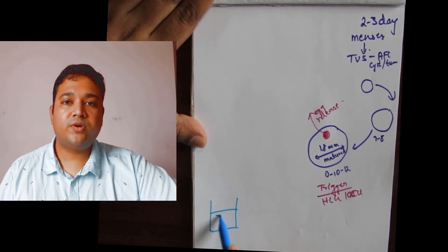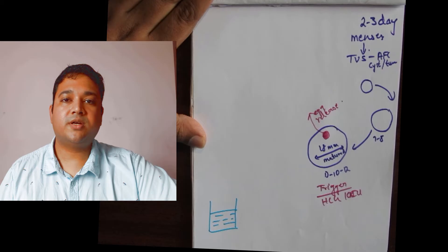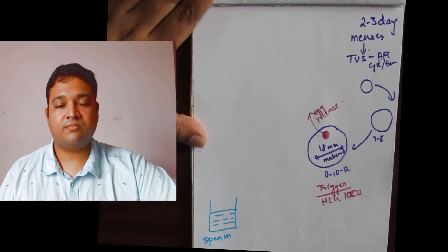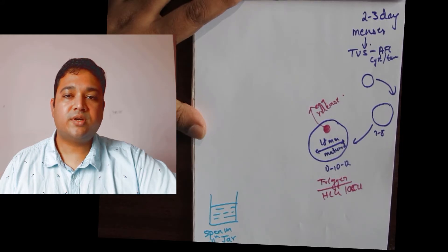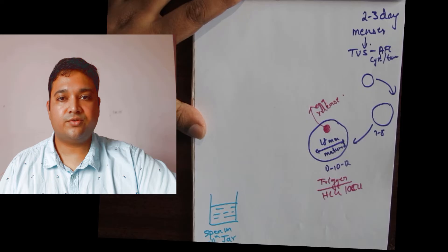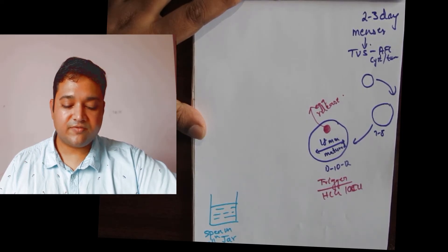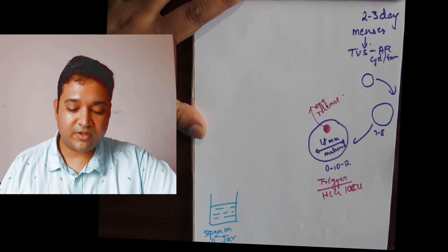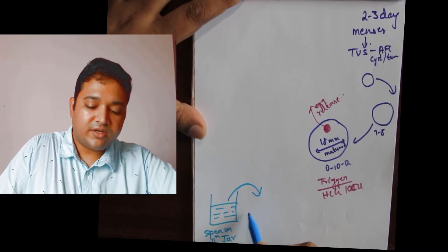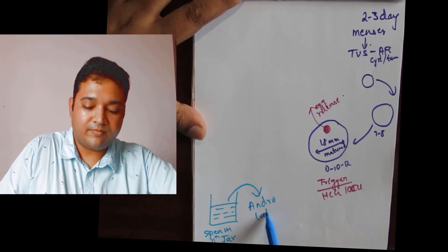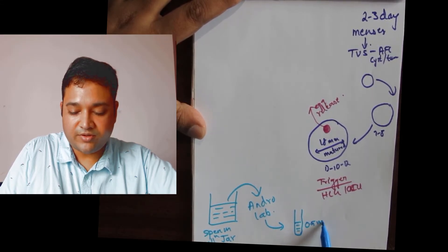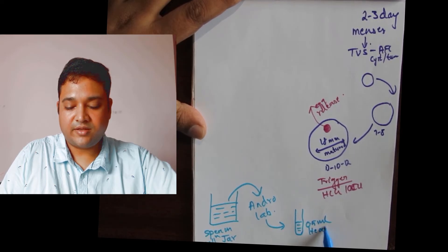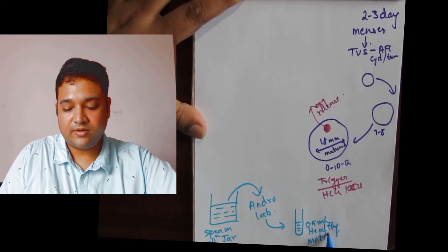On the day of IUI, the husband gives his sperm sample in a wide-mouth sperm collection jar by the method of masturbation. If for whatever reason the husband is unable to do so by masturbation, he is also allowed to use a sterile condom to collect his sample by vaginal intercourse. By either of these methods, the sample is sent to the andrology lab where it is processed into a 0.5 ml concentrate containing healthy motile sperms.